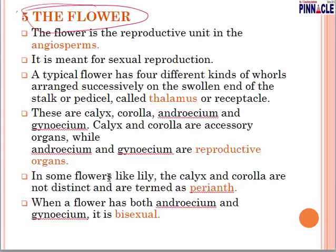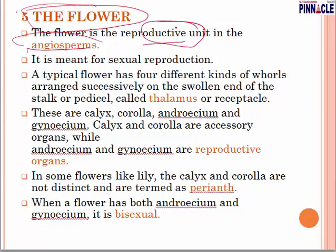Now let us discuss all this terminology in detail. The flower is the reproductive unit in angiosperms — this is an important line. Questions are sometimes asked: which is the reproductive organ in a plant? The answer is the flower, because everything related to reproduction takes place here; that is why it is called a unit.